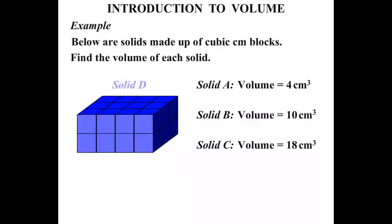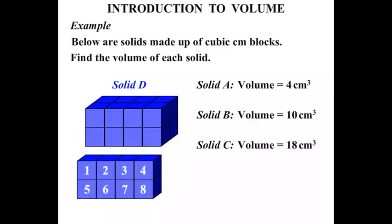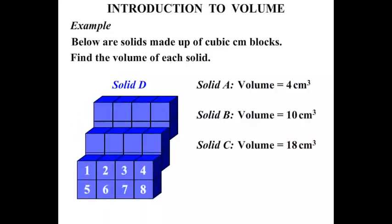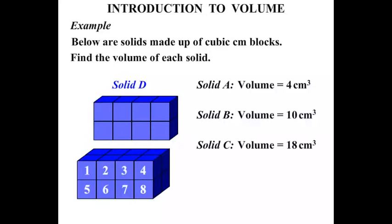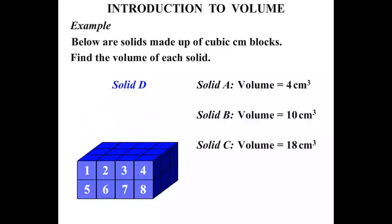The next one, solid D. 1, 2, 3, 4, 5, 6, 7, 8. OK, the front has 8 cm³ there. Now if we move that down, we can see the next layer. And then another layer. So what have we got? We've got 3 lots of 8. And 3 8's are 24. So solid D has a volume equal to 24 cm³.